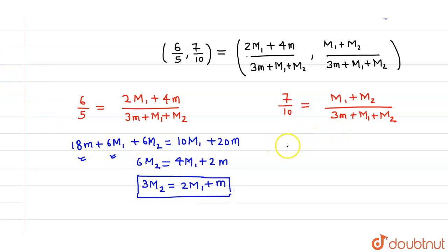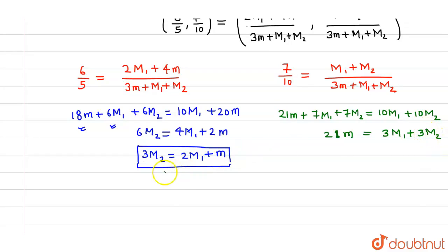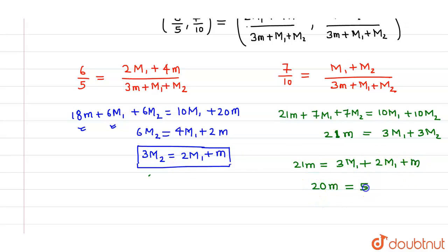Cross-multiplying the y-coordinate equation gives 21m plus 7M1 plus 7M2 equals 10M1 plus 10M2, which rearranges to 3M1 plus 3M2 equals 21m. Substituting 3M2 equals 2M1 plus m into this equation: 21m equals 3M1 plus 2M1 plus m, giving 20m equals 5M1, so M1 equals 4m.